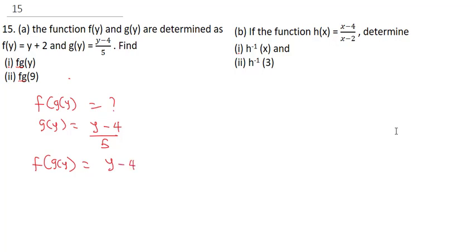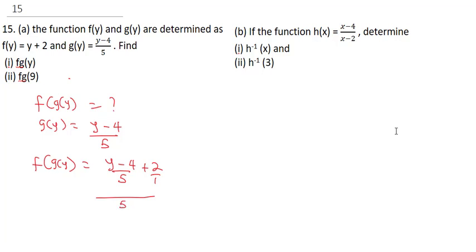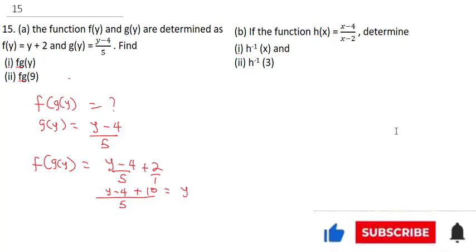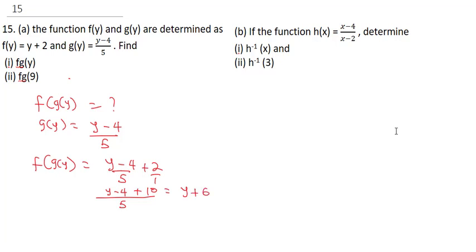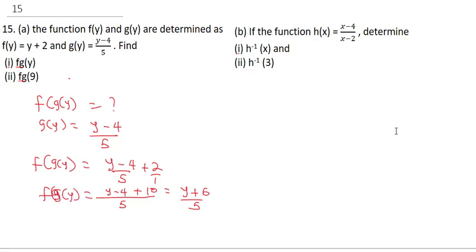So this is going to be y minus 4 over 5, plus 2. From here, in order to solve this, you need to find the LCM, which is 5. So you're going to have y minus 4 plus 5 times 2, which gives you 10. This gives you y plus 6 all over 5. So your f of g of y is equal to y plus 6 over 5.